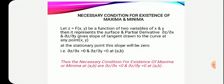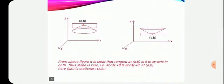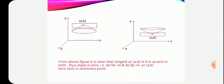The necessary condition for the existence of Maxima and Minima at (a, b) is: del z by del x equal to 0 and del z by del y equal to 0. This is the necessary condition for the existence of Maxima and Minima, which can also be understood from the graph.